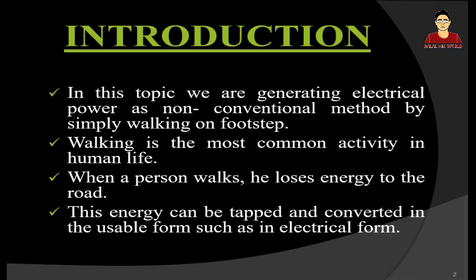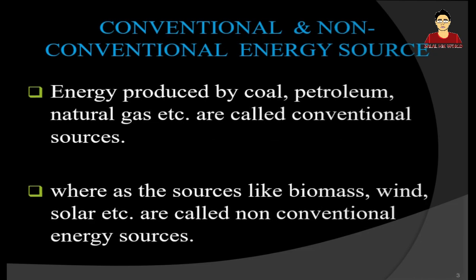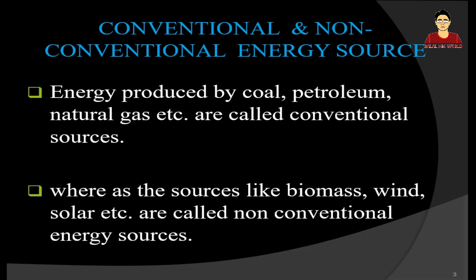In this topic, we are generating electrical power as a non-conventional method by simply walking. Walking is the most common activity in human life. When a person walks, they lose energy to the road; this energy can be tapped and converted into a usable form such as electrical energy. Energy produced by coal, petroleum, and natural gas are called conventional sources, whereas sources like biomass, wind, and solar are called non-conventional energy sources.